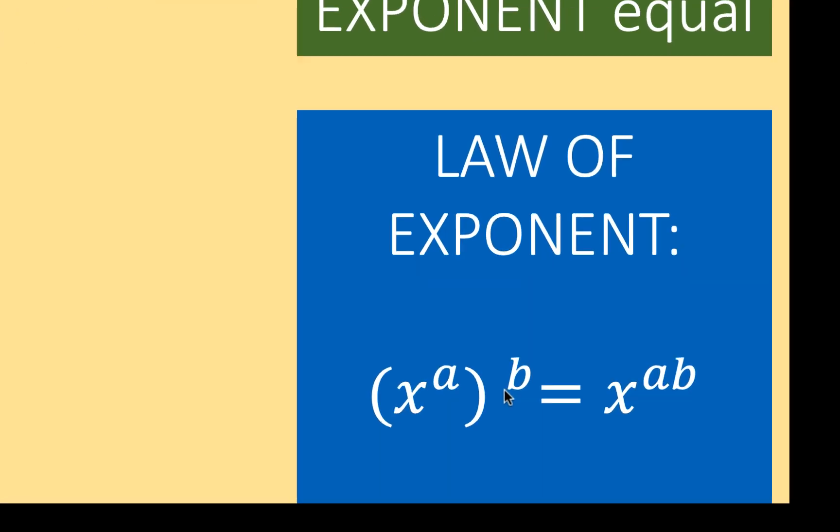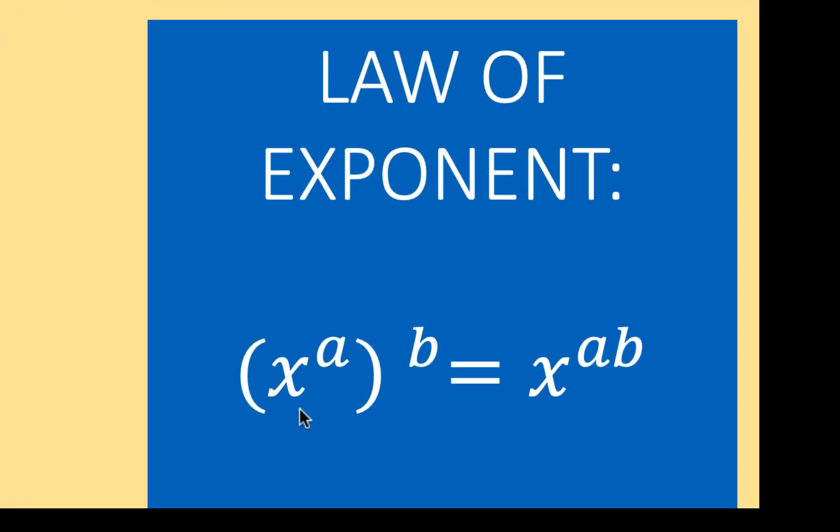Let's recall the power of power rule. When we have the quantity x raised to a raised to another exponent b, that is equal to the base x. And then we multiply the exponent a and the exponent b to get ab.